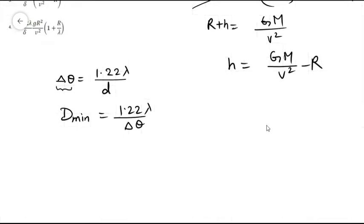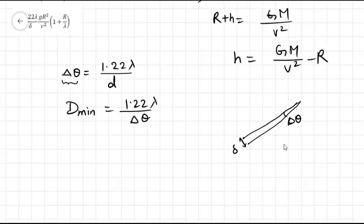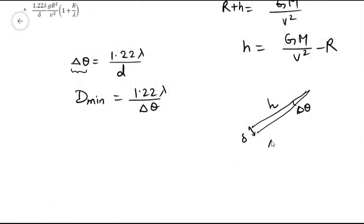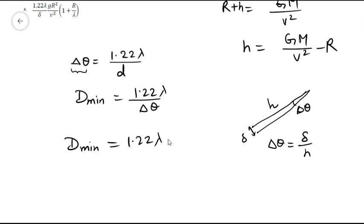Now delta-theta is the angular separation. With the angle delta-theta, ground separation delta, and height h forming a right triangle, delta-theta equals delta/h. Substituting this gives d minimum equals 1.22λh/delta.